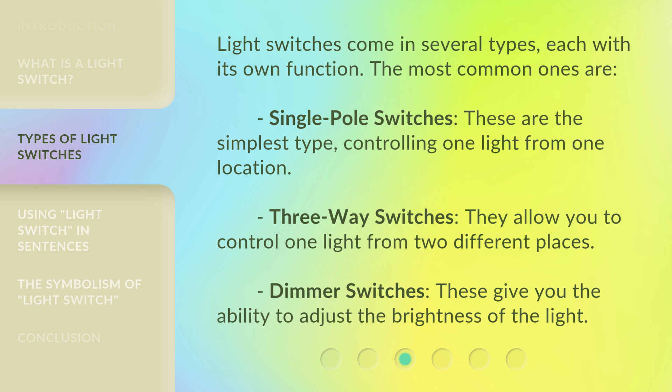Three-way switches allow you to control one light from two different places. Dimmer switches give you the ability to adjust the brightness of the light.